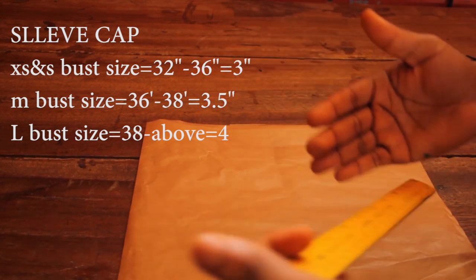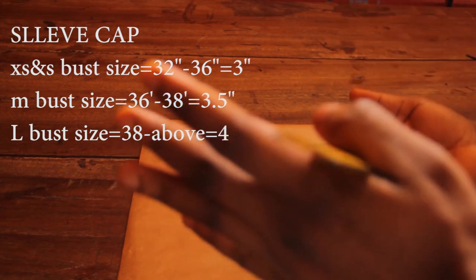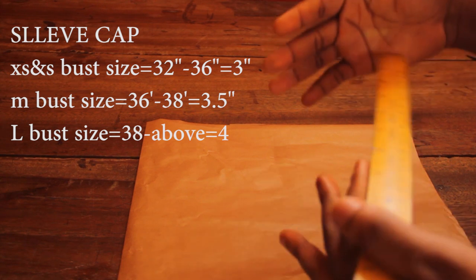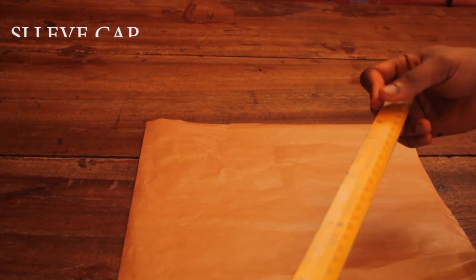If a person has a bust size between 32 and 36, you would use 2 inches for the sleeve cap. If the person is a medium with a bust size of 36 to 38, you use 3.5 inches.